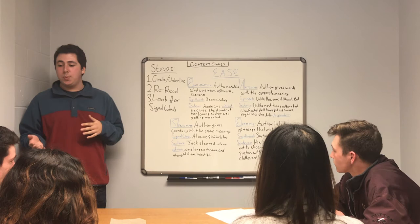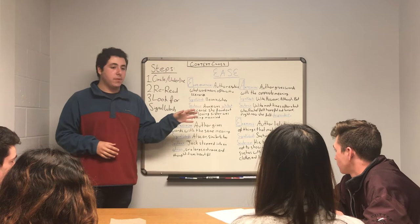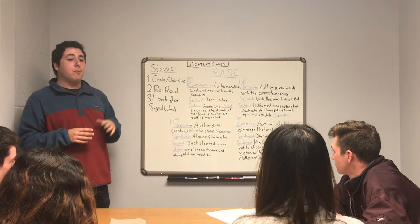Over here I have four types of context clues. I like to use the acronym EASE to remember them, because once you've memorized all of them, finding out what a word means using context clues can become super easy.